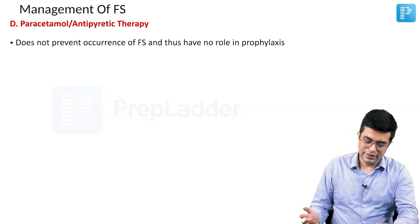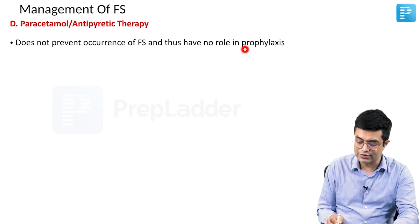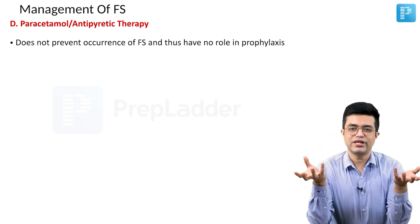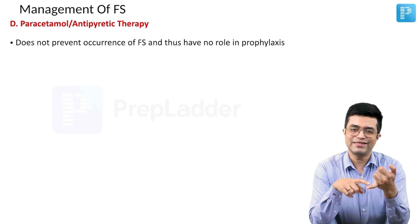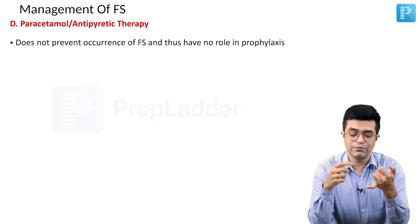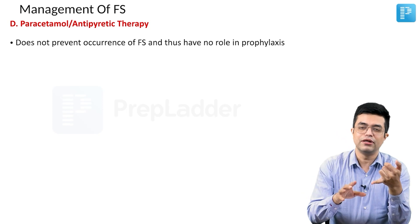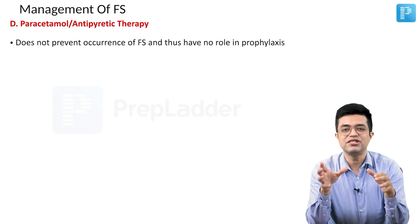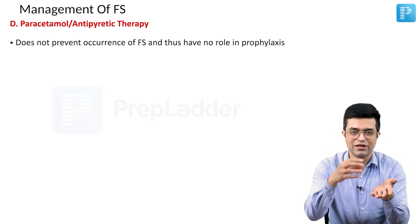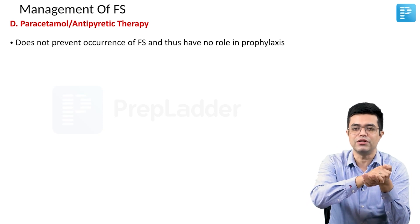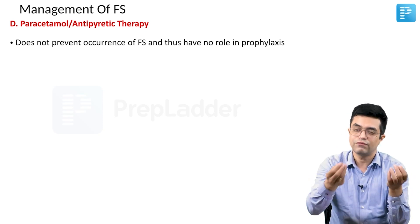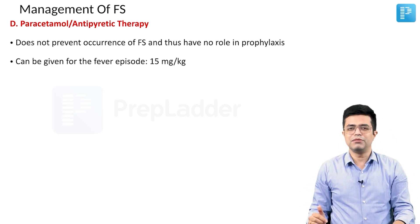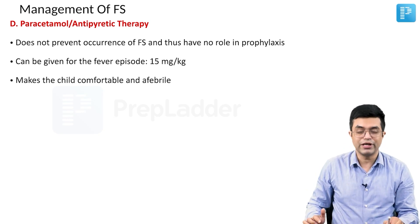Paracetamol or antipyretic therapy does not prevent the occurrence of febrile seizures and thus has no role in prophylaxis. You do give paracetamol — not to abort the active seizure but to make the child comfortable and treat the fever. Simple febrile seizures will abort in about 5 minutes. Paracetamol can be given at 15 mg per kg, repeated every 6 hours as needed.